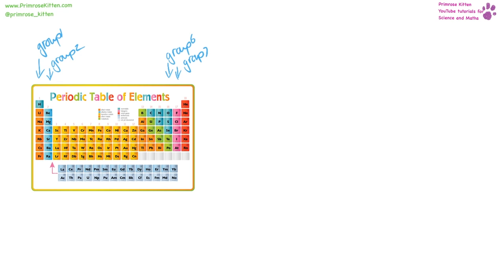The periodic table gives us loads of information. The first bit is about groups — groups go down the periodic table: group one, two, three, four, five, six, seven, and eight, or group zero. Groups tell us the number of electrons on the outer shell. So things in group one have one electron in the outer shell, group two have two, group six have six, and group seven have seven electrons in the outer shell.